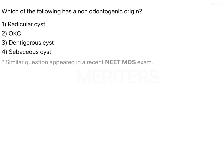Which of the following has a non-odontogenic origin? The options are: radicular cyst, OKC which stands for odontogenic keratocyst, dentigerous cyst, and sebaceous cyst.